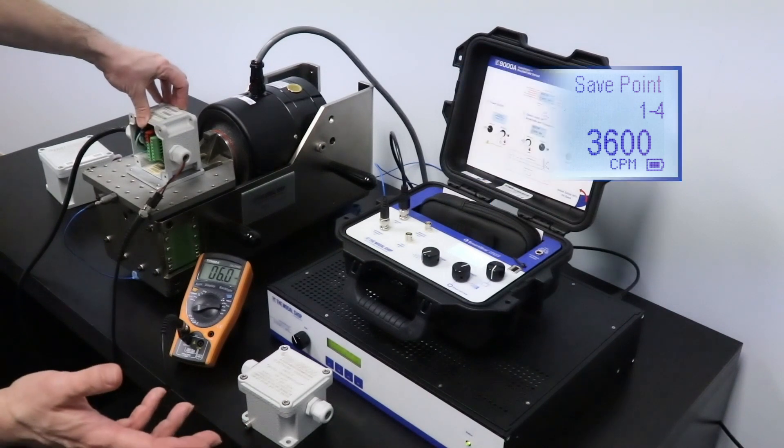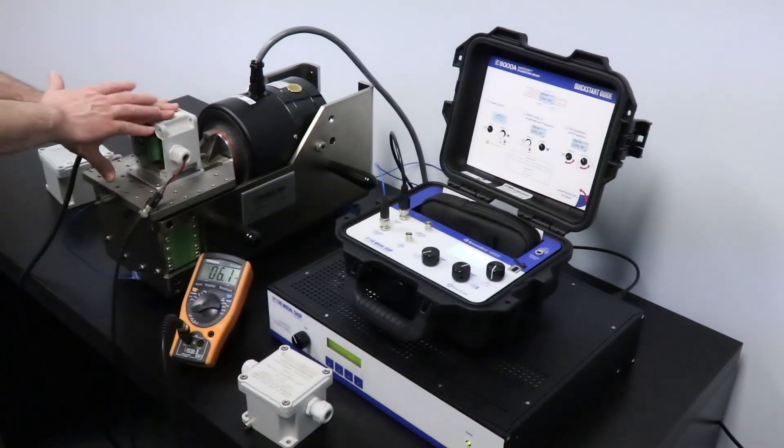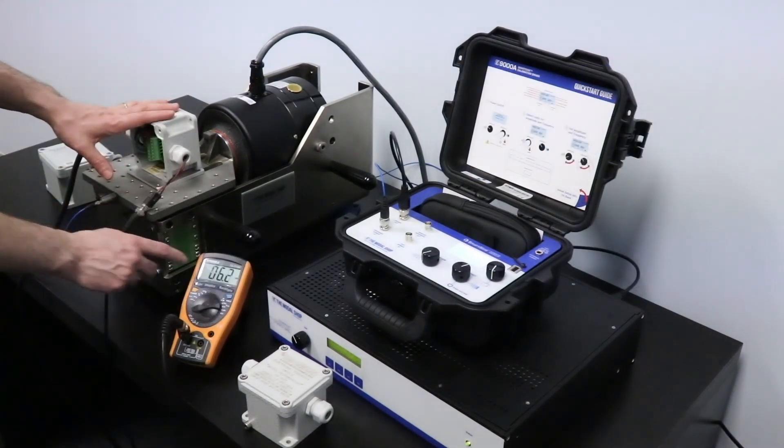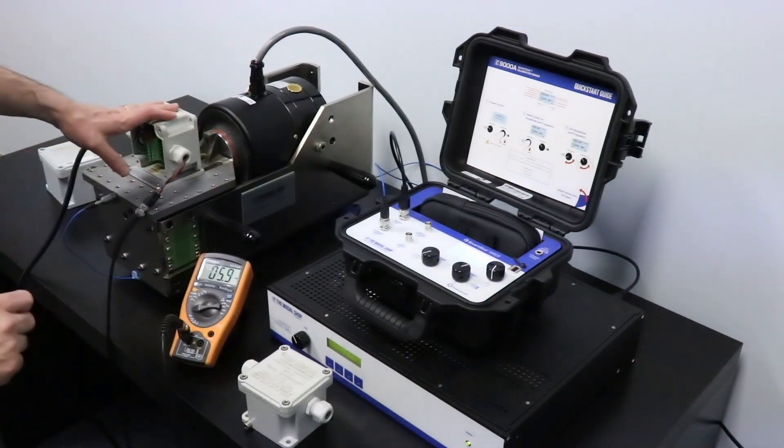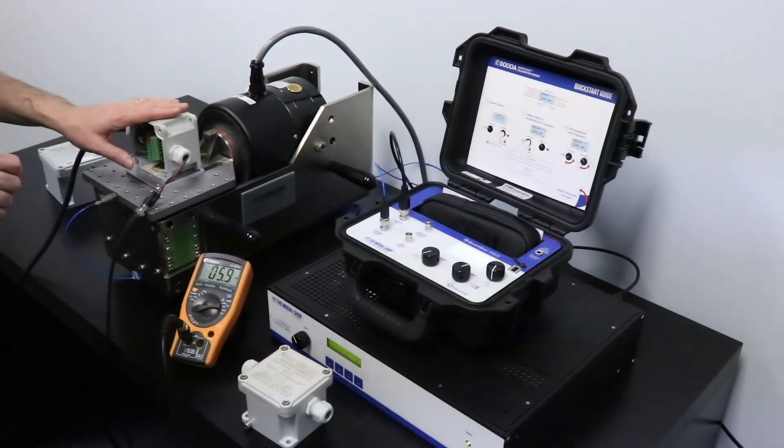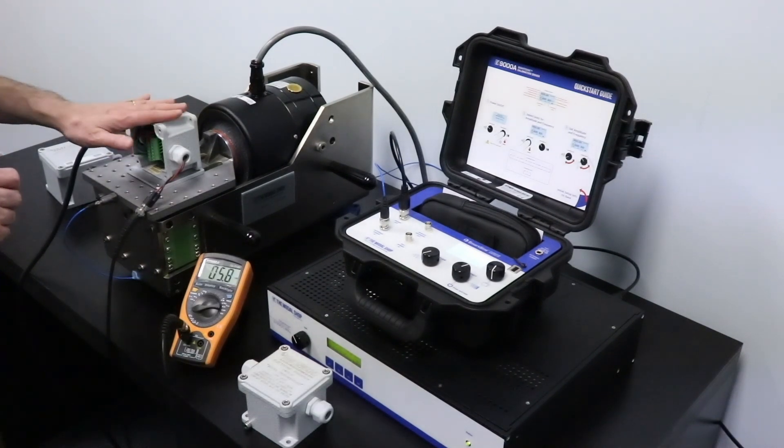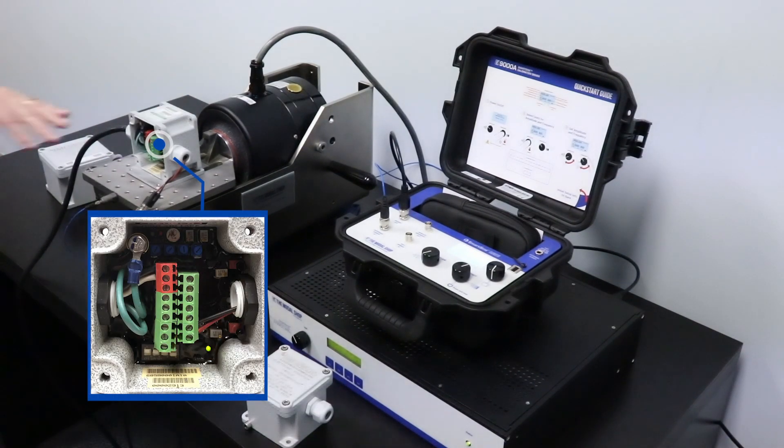So at this point, I can see my vibration switch is outputting a little bit of current. So that's a good indication. I'm sending the signal to my PLC and there's no tripping, no alarm, no alert.